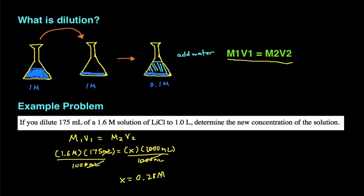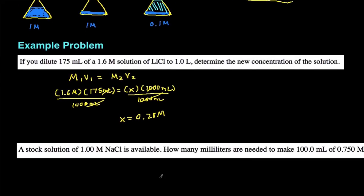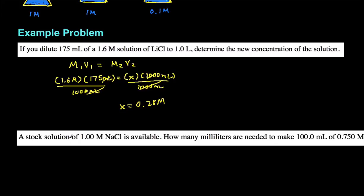Okay, let's do another example. So the next example reads, a stock solution of 1.0 molar NaCl is available. How many milliliters of that stock solution are needed to make 100 milliliters of a 0.75 molar concentration solution?